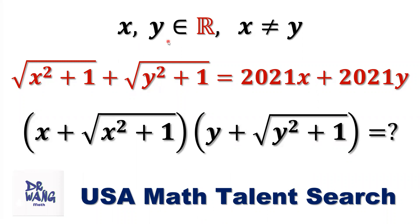If x, y are real numbers, x is not equal to y, and the square root of x squared plus 1 plus the square root of y squared plus 1 equals 2021 times x plus 2021 times y. What is the value of x plus the square root of x squared plus 1, times y plus the square root of y squared plus 1?